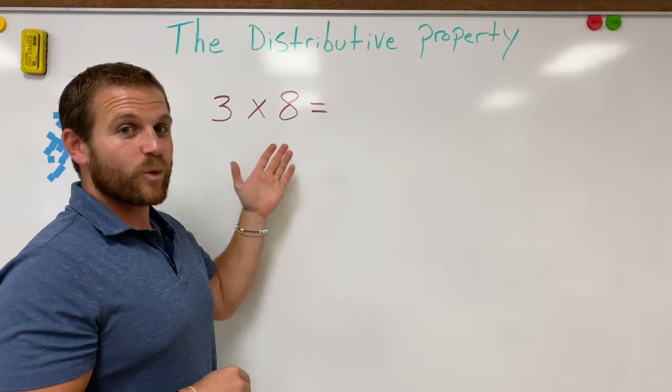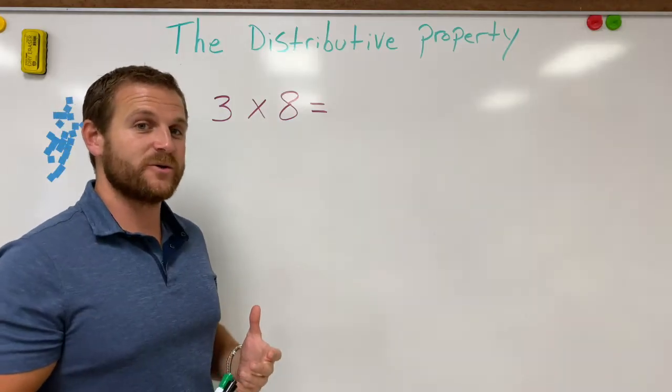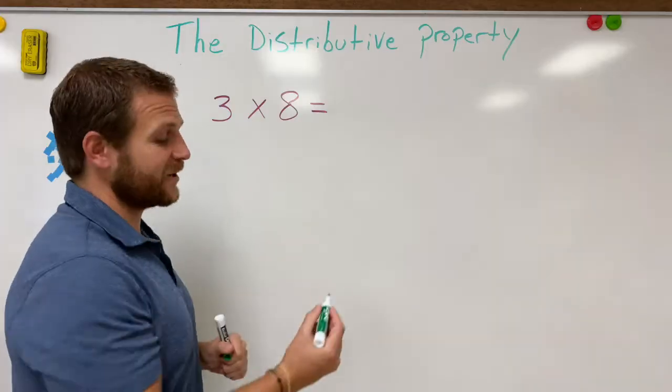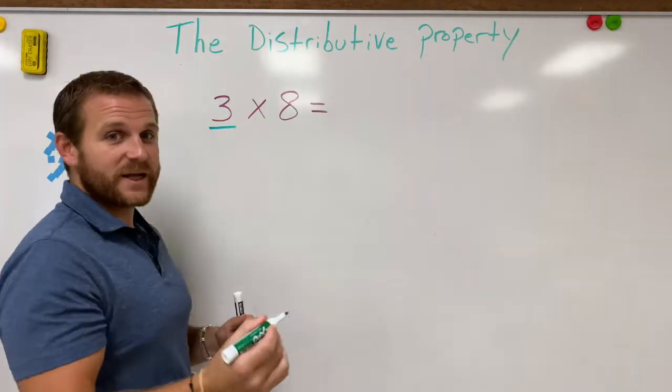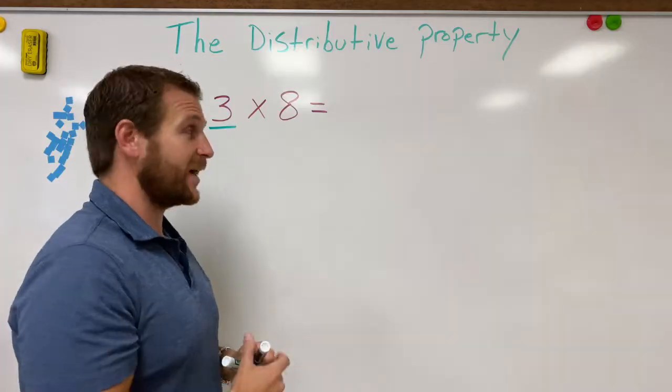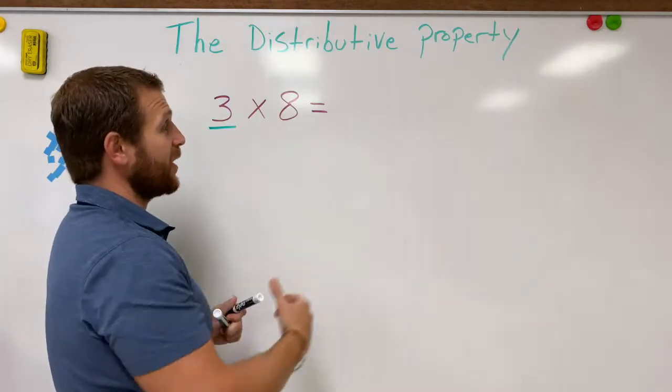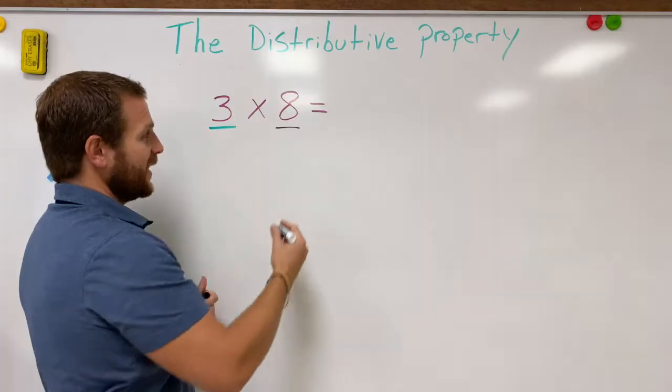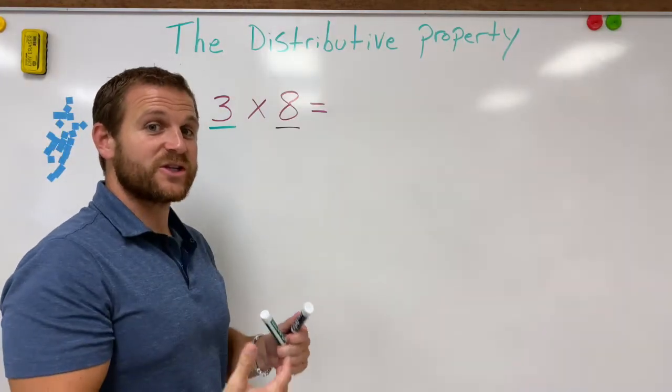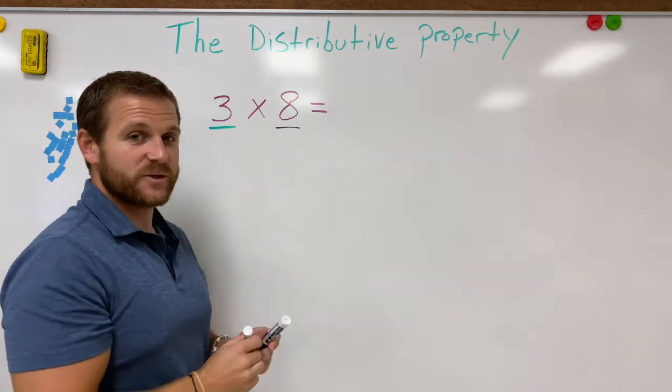I have three times eight right here. What I'm going to do is decide which number I want to distribute and which number I want to stay the same. Now my three times tables are pretty simple, so I'm going to keep the same. So I'm going to underline that with green. Now the eight, that's the number that I want to distribute into my problem later on. So I'm going to underline that in black. Now when I go to write my additional two problems that will eventually add up to the product of three times eight, I'm going to put parentheses around them.